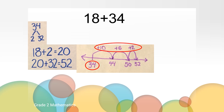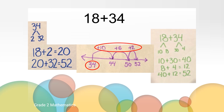Maybe you used a different strategy and split both numbers into 10s and 1s, added the 10s first and the 1s next, and then added the totals together. If we split 18 into 10s and 1s, we have 10 and 8. If we split 34 into 10s and 1s, we have 30 and 4. We can add the 10s first: 10 plus 30 to get 40. Then we can add the 1s: 8 and 4 to get 12. 40 plus 12 equals 52.